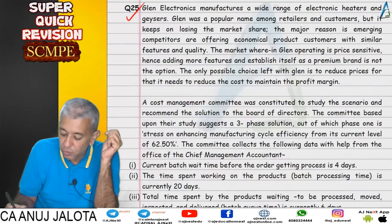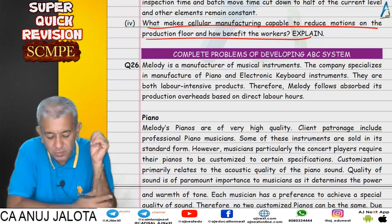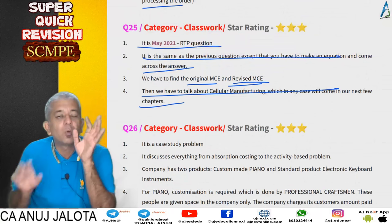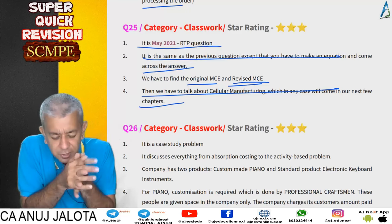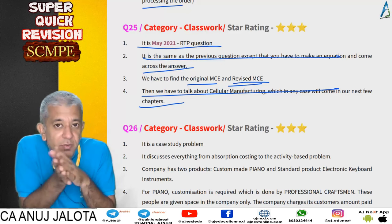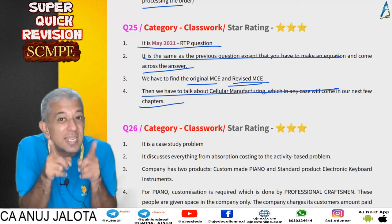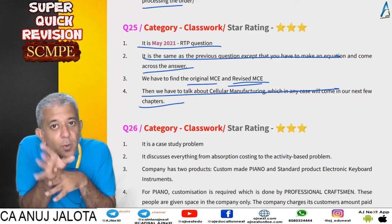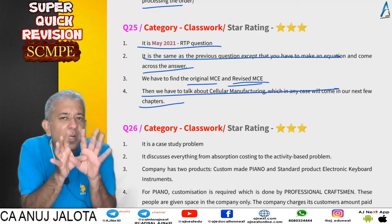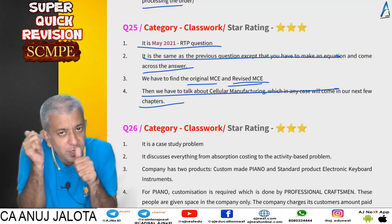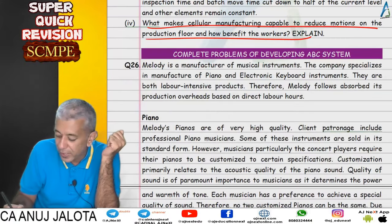In part four of question 25, we had to comment on how cellular manufacturing helps reduce motions on the production floor and how it benefits workers. We discussed how different cells are merged together, the amount of worker movement is restricted, a U-form layout is used so one worker can supervise multiple steps, and it helps in single-piece flow. More detail on cellular manufacturing will be covered in its exclusive chapter.